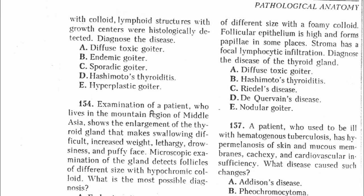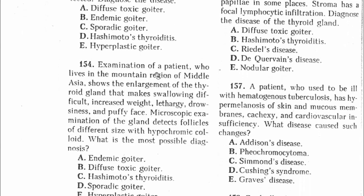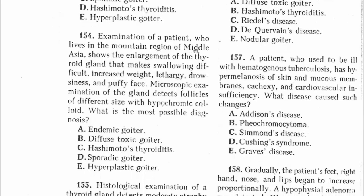Question 154: Examination of a patient living in a mountain region of Middle Asia shows enlargement of the thyroid gland making swallowing difficult and increased weight. Persons living in these areas are usually devoid of iodine, leading to thyroid enlargement. This disease is called endemic goiter. The answer is endemic goiter.